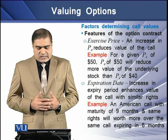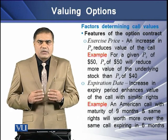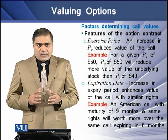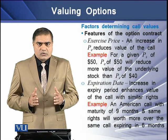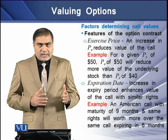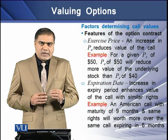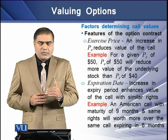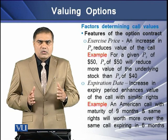Within the option contract features, there are two factors: exercise price and expiration date. Any increase in the exercise price will reduce the price of the call. For example, for a given stock price of $50, an exercise price of $50 will reduce the call value more than an exercise price of $40 — meaning any rise in the exercise price drives the value of the call down.